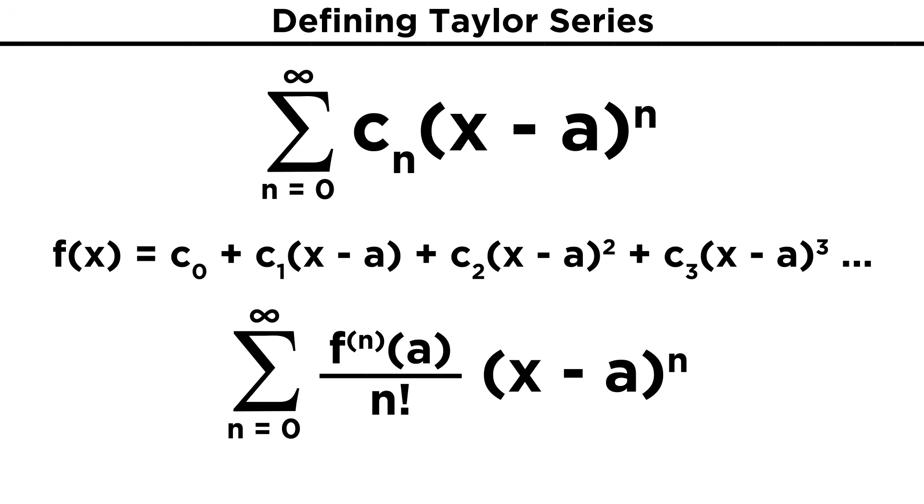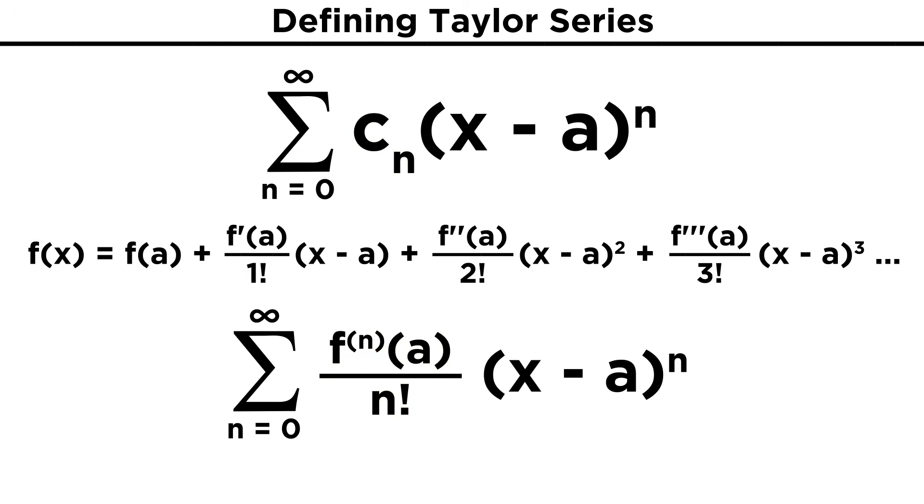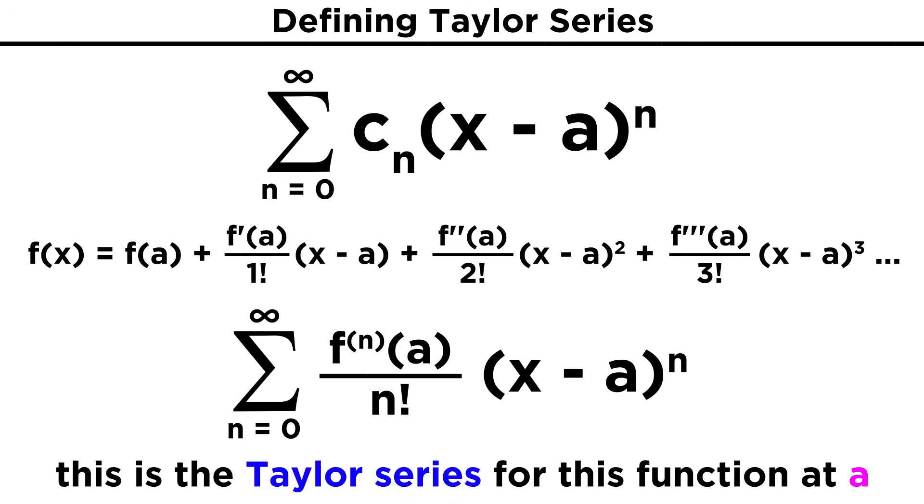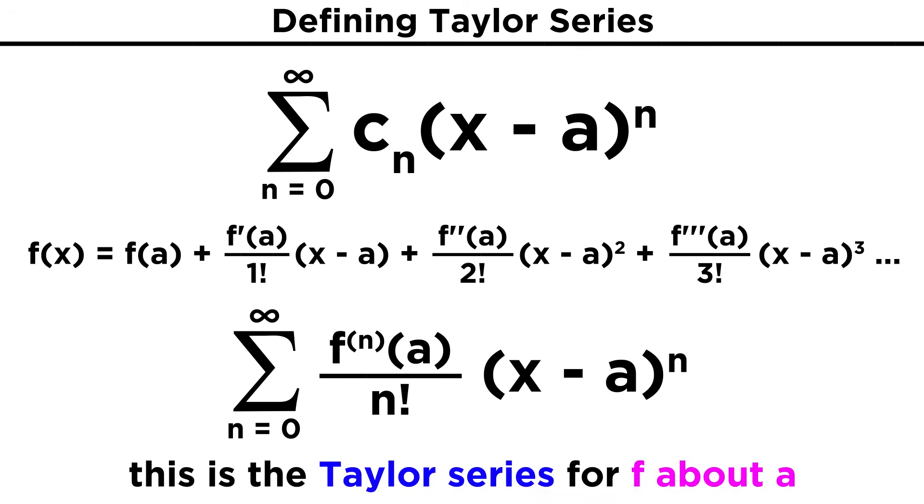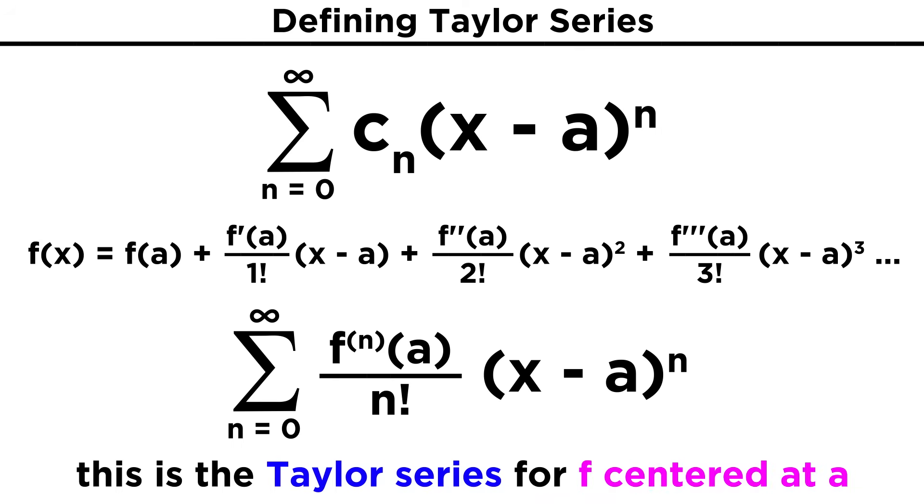If we then generate a new function of the same form, but substitute this formula in for c sub n, such that the terms in the series look like this, we have just generated the Taylor series of the function f at a, which can also be described as f about a, or f centered at a. So a Taylor series is a type of power series, but with the coefficients defined like so.